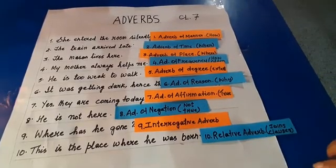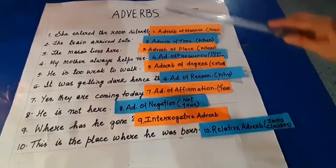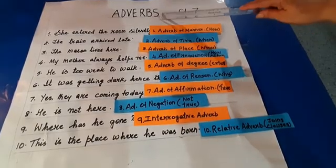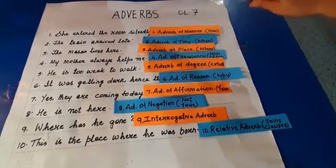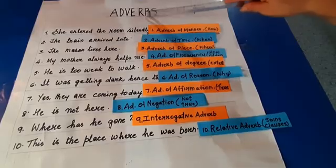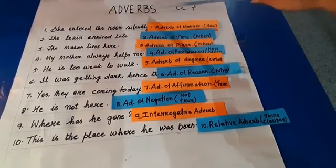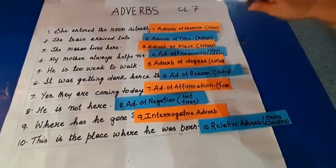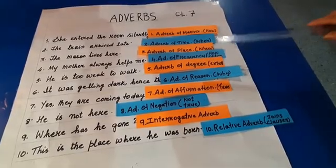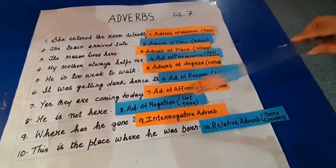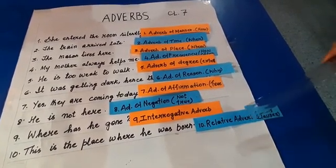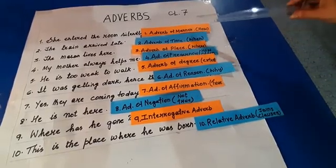Adverbs are modifying or adding meaning to the verbs. We know that the verb is a doing word, an action word telling me what someone is doing. When a word adds more meaning to your verb, then you get your adverb. Remember to use how, when, where, how often, to what extent, why, is it true, is it not true, does it ask a question, and when it joins two sentences — you get the different kinds of adverbs.